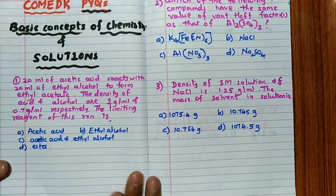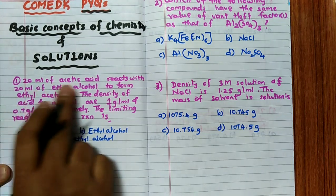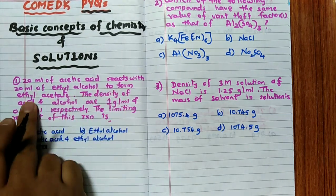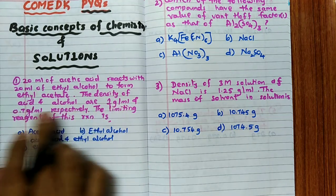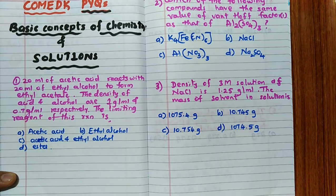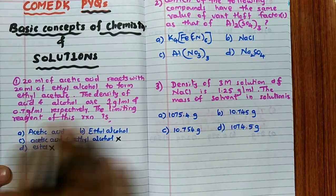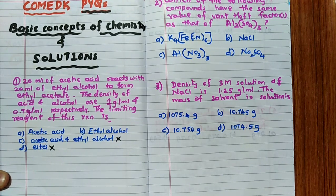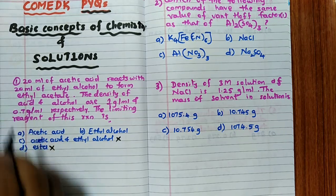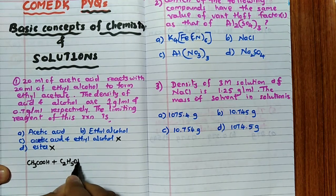The first question is on limiting reagent, the same type asked in the last CAT exam. 20 ml of acetic acid reacts with 20 ml of ethyl alcohol to form ethyl acetate (an ester). The density of the acid and alcohol are given, and we need to find the limiting reagent. We can immediately eliminate two options: the ester is a product, not a reagent, and 'both to the same extent' is also not possible. Only two options remain. First, write the reaction: CH₃COOH + C₂H₅OH.